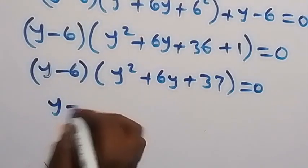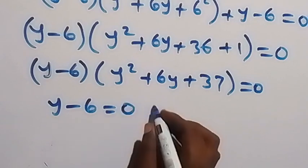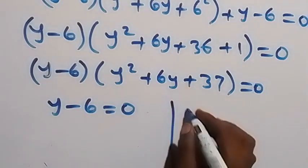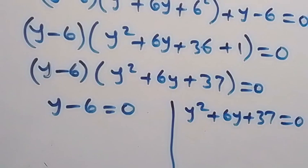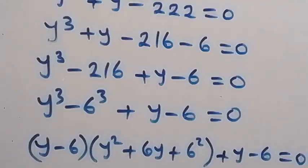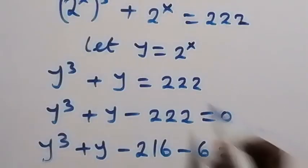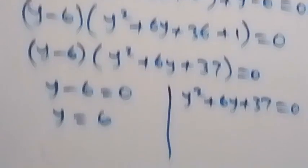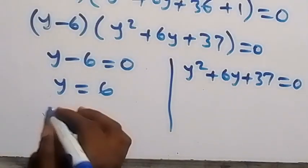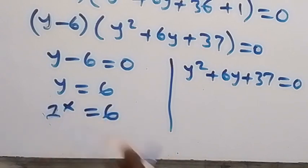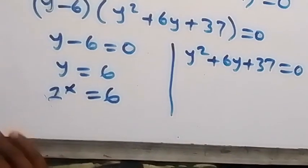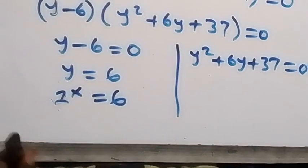We have two possible cases. Either y minus 6 equals zero, giving y equals 6, or y squared plus 6y plus 37 equals zero. From y equals 6, and since y equals 2 raised to power x, we have 2 raised to power x equals 6. Taking the log on both sides gives us log of 2 raised to power x equals log 6.